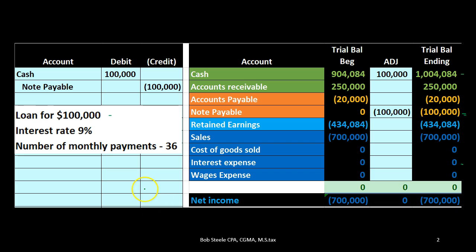Here's our information for the initial journal entry. We have a loan of $100,000, interest at 9%, and 36 monthly payments. To put this on the books, all we need is the $100,000 to record the initial loan — cash goes up by $100,000 and the note payable goes up by $100,000. The note payable is now on the books.